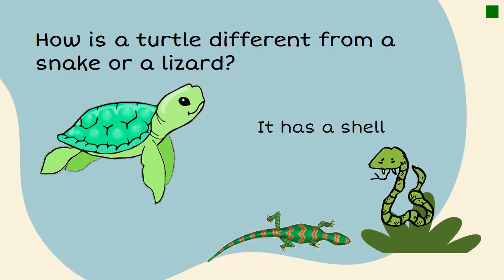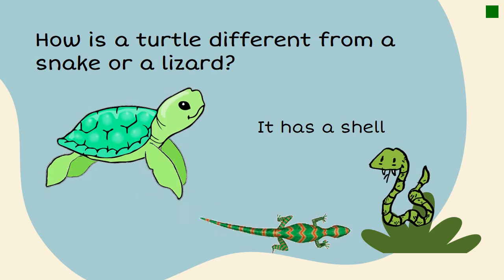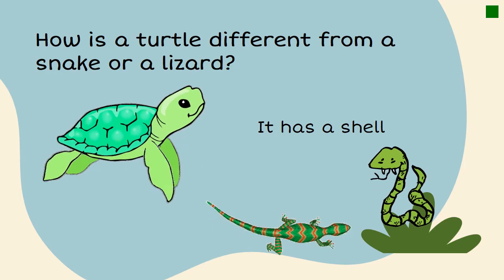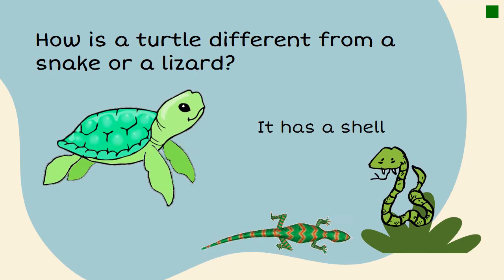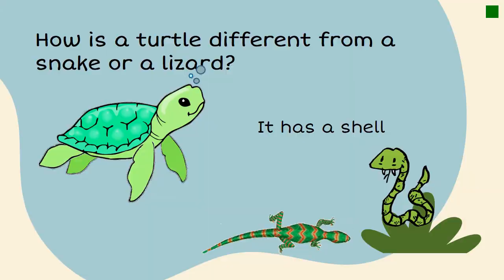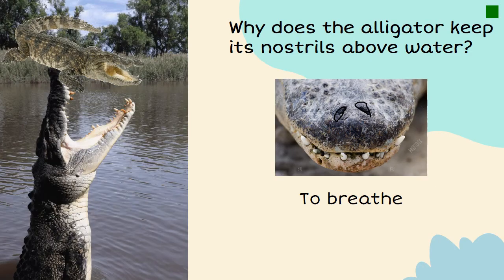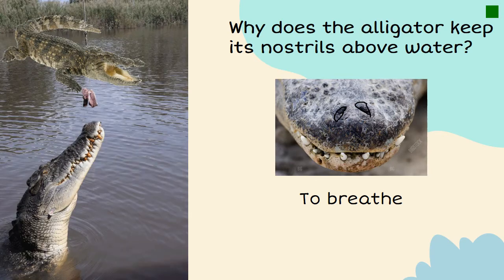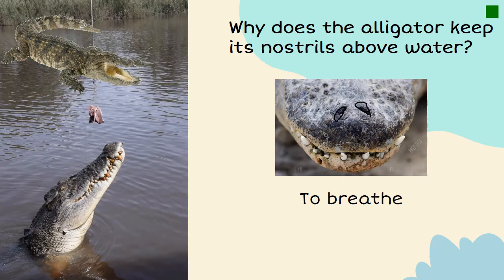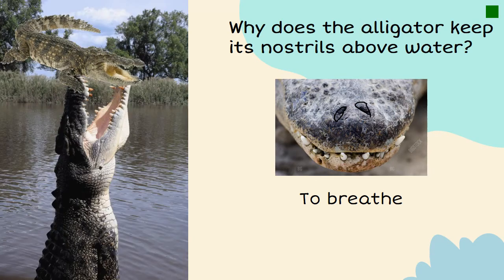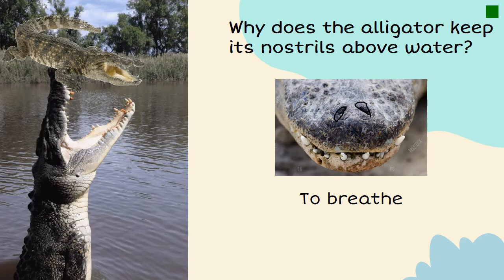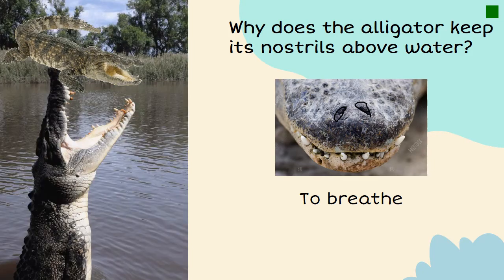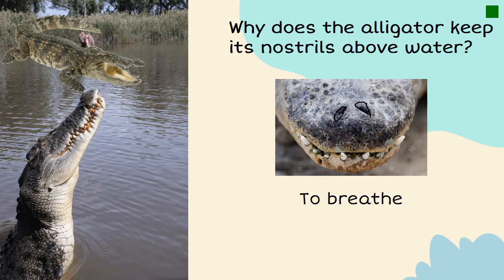Can you tell how a turtle is different from a snake or a lizard? A turtle has a shell. Now, here you can see an alligator. Why does the alligator keep its nostrils above the water? To breathe, right!